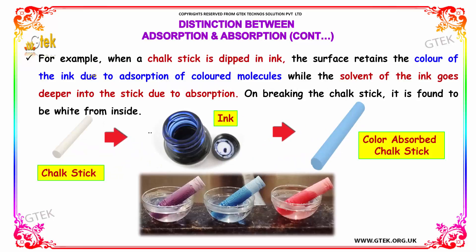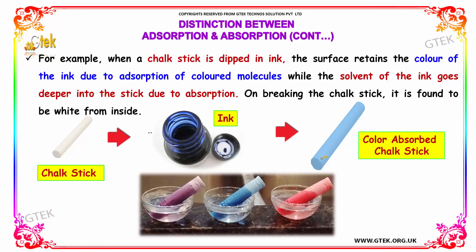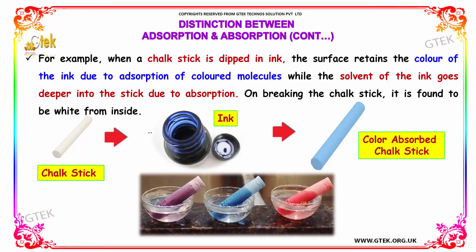For example, when a chalk stick is dipped in ink, the surface retains the color of the ink due to adsorption of colored molecules, while the solvent of the ink goes deeper into the stick due to absorption. On breaking the chalk stick, it is found to be white from inside.